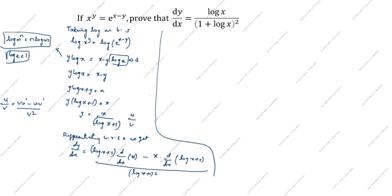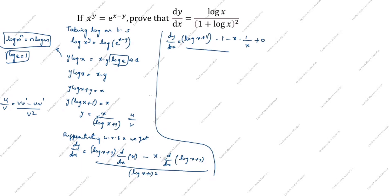So dy/dx equals (log x plus 1) times 1, minus x times the differentiation of (log x plus 1). The differentiation of log x is 1/x and the differentiation of 1 is 0, giving x times (1/x), all divided by (log x plus 1) the whole square.